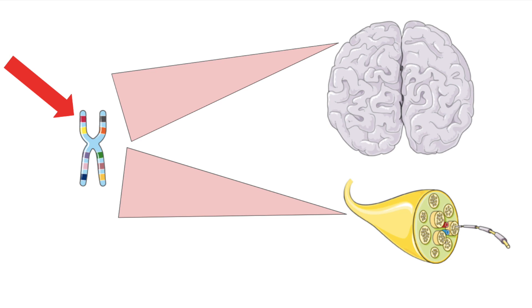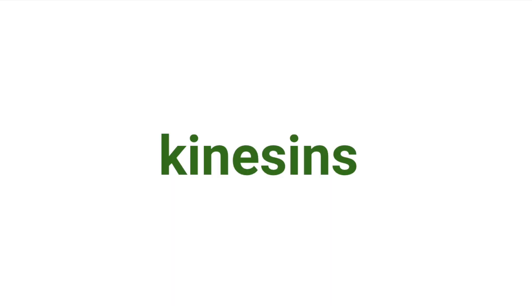KIF1A is a specific gene found in the brain and nerves. The protein produced by the KIF1A gene belongs to a group of proteins known as kinesins.